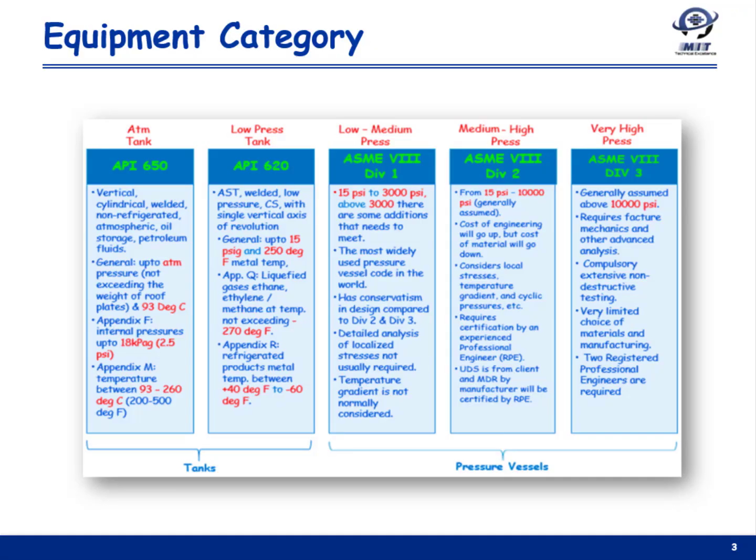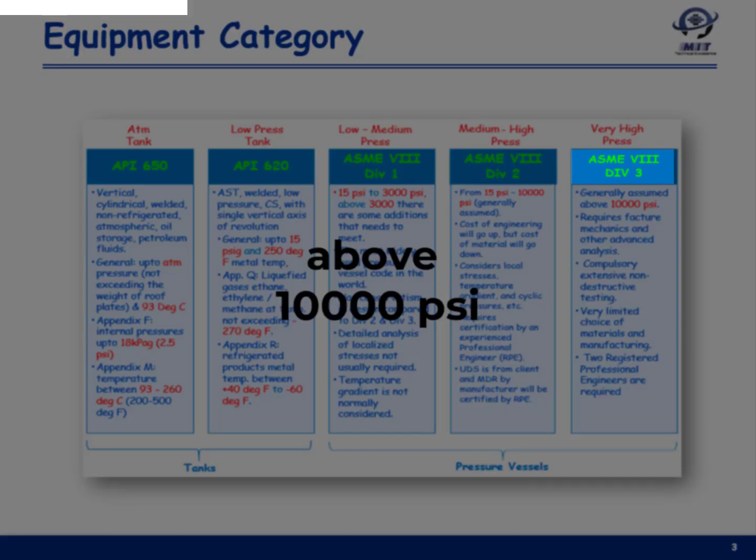Finally, Section 8 Division 3 is recommended by the code as an alternate to Division 2 for very high pressures — 10,000 psi and above.